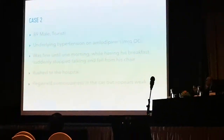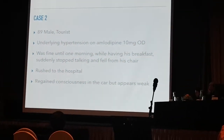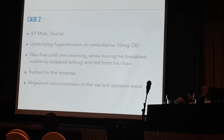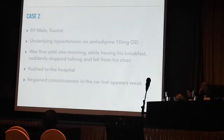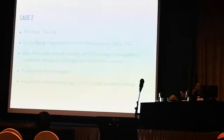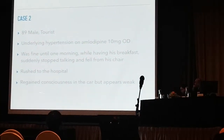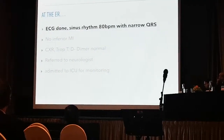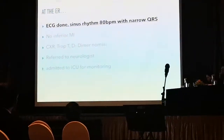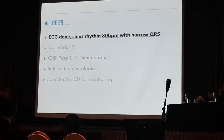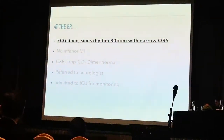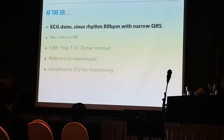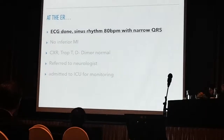Move on to my last case — a real case. A very old man, 89 years old. He has underlying hypertension, on amlodipine 10 milligrams, and was doing very well. Then one morning he was eating his breakfast and suddenly fainted — witnessed by his grandson and daughter — and was rushed immediately to the hospital. An ECG was done and was written as sinus rhythm beating at 80 beats per minute, narrow QRS complex. Different from the first case which was broad complex due to right bundle branch block. A narrow QRS beating at 80 beats per minute — so the faint cannot be from the heart at that moment. There was no inferior MI, x-ray, troponin, D-dimer — everything normal.